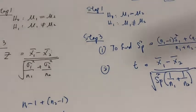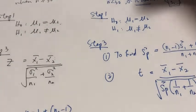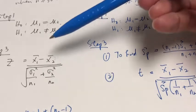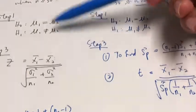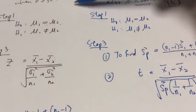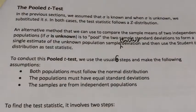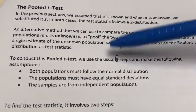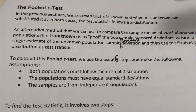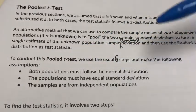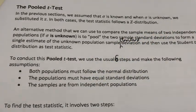Hopefully you can see the difference between the pooled t-test and the two-population mean test: one uses Z because we've got large sample size and we know the population standard deviation, whereas here we use t because it's a pooled t-test. The assumptions for conducting a pooled t-test are: both populations must follow the normal distribution, the populations must have equal standard deviations, and the samples are from independent populations.